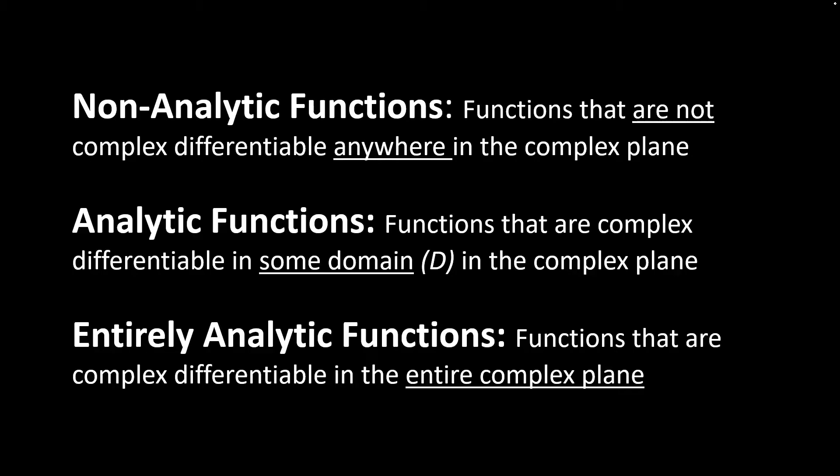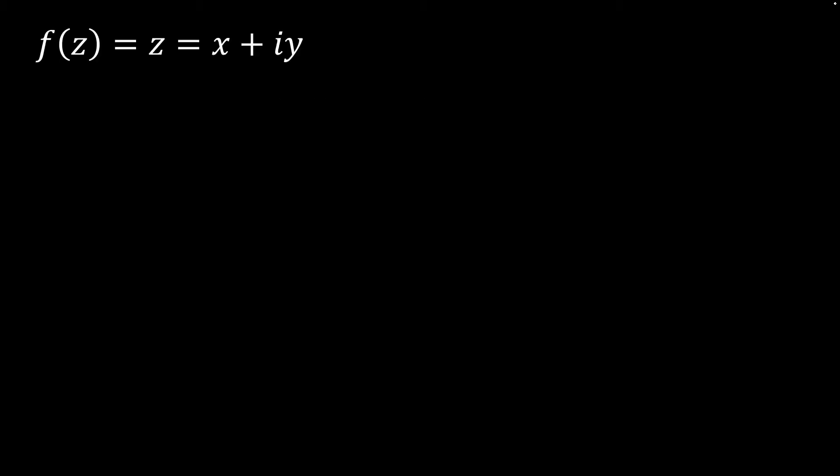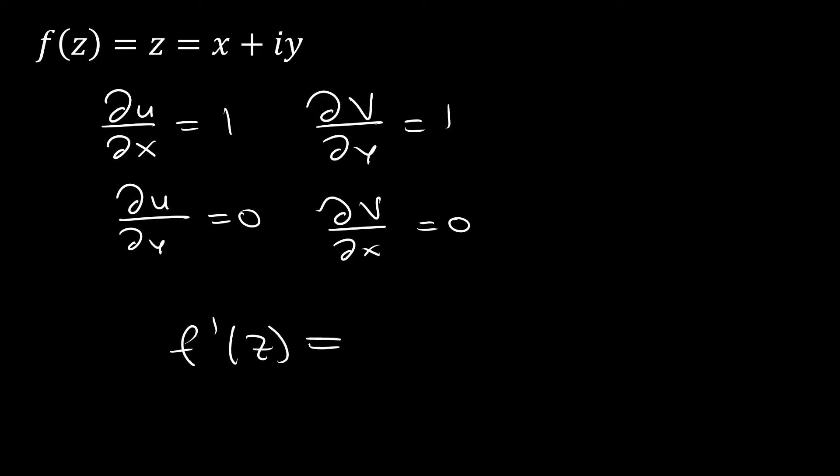Let's do an example of each. Here we have a pretty simple and straightforward function, one of the easiest complex functions we can get: just x plus iy. If we test this with our Cauchy-Riemann equations, as you can see, our Cauchy-Riemann equations are satisfied. Moreover, if we actually take the derivative of this, f'(z), that's just one, or a constant. We can take this derivative anywhere in the complex plane and get a constant out. So this function is an entirely analytic function.